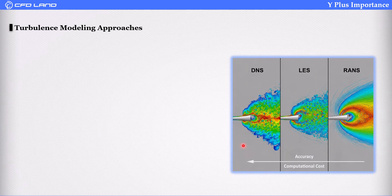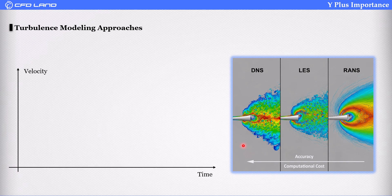So there are three approaches for modeling turbulent flow. The easiest one is RANS, it stands for Reynolds-Averaged Navier-Stokes. As its name says, we average velocity. As you can see, we have just a straight line. It's an average velocity.